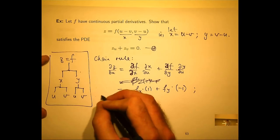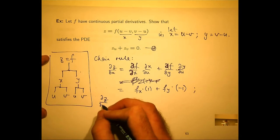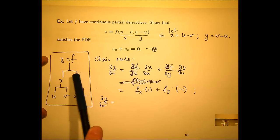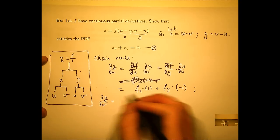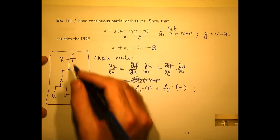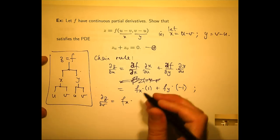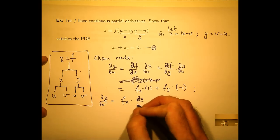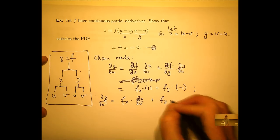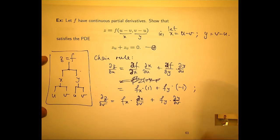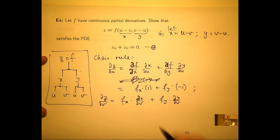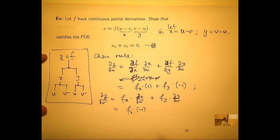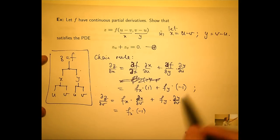What about dz/dv? Let's check all the paths to a v: ∂f/∂x · ∂x/∂v plus ∂f/∂y · ∂y/∂v. Using subscripts to save time: dx/dv is going to be minus 1, and dy/dv is going to be positive 1.